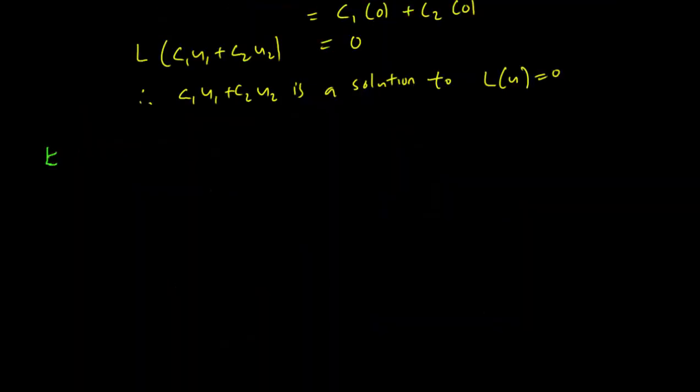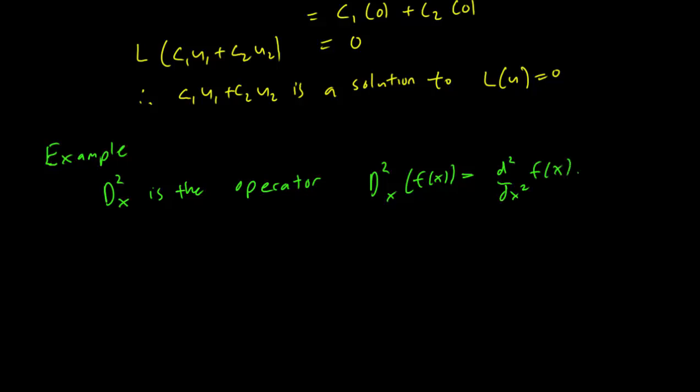Let's work through an example. Let's take the operator D²ₓ, which is the operator that takes a function to its second derivative. So D²ₓ(f) = d²f/dx², and it's linear. It's pretty easy to check that it is linear.